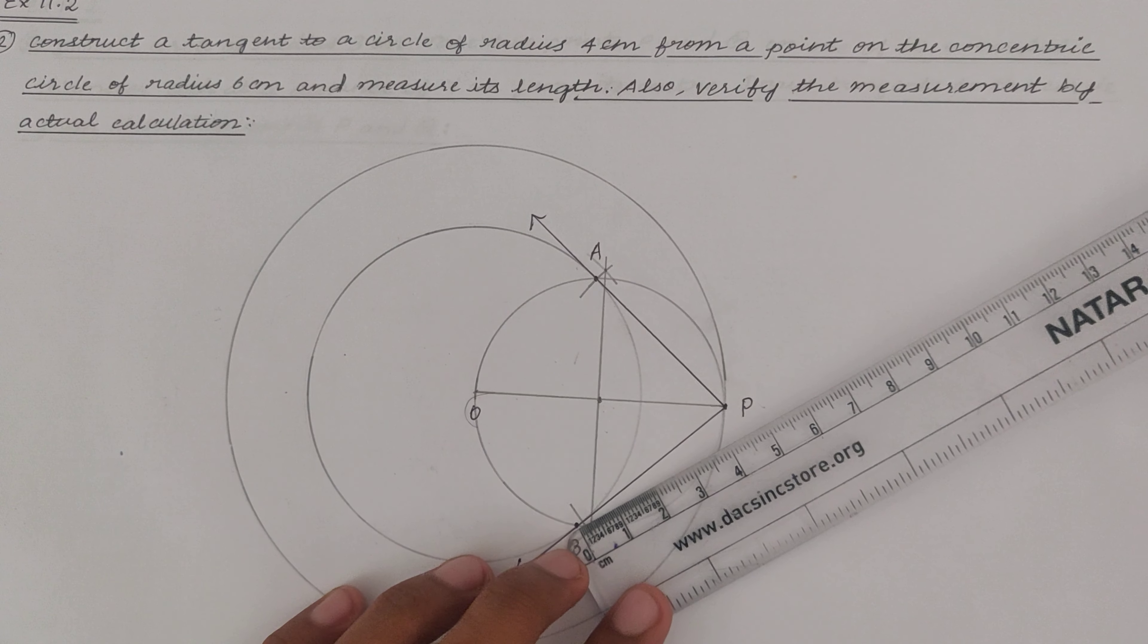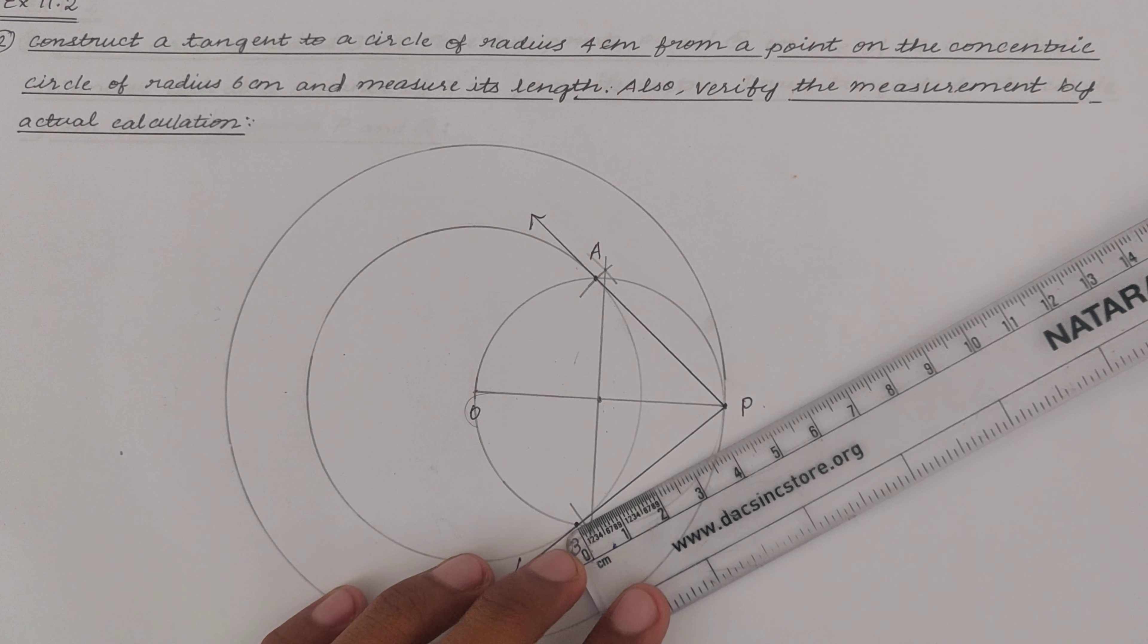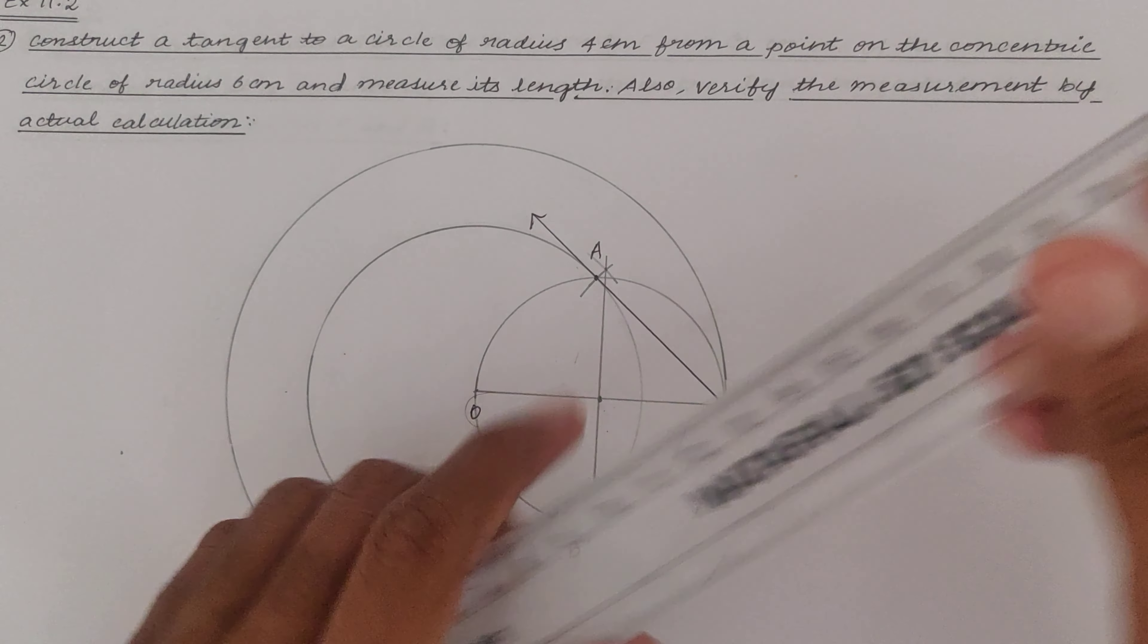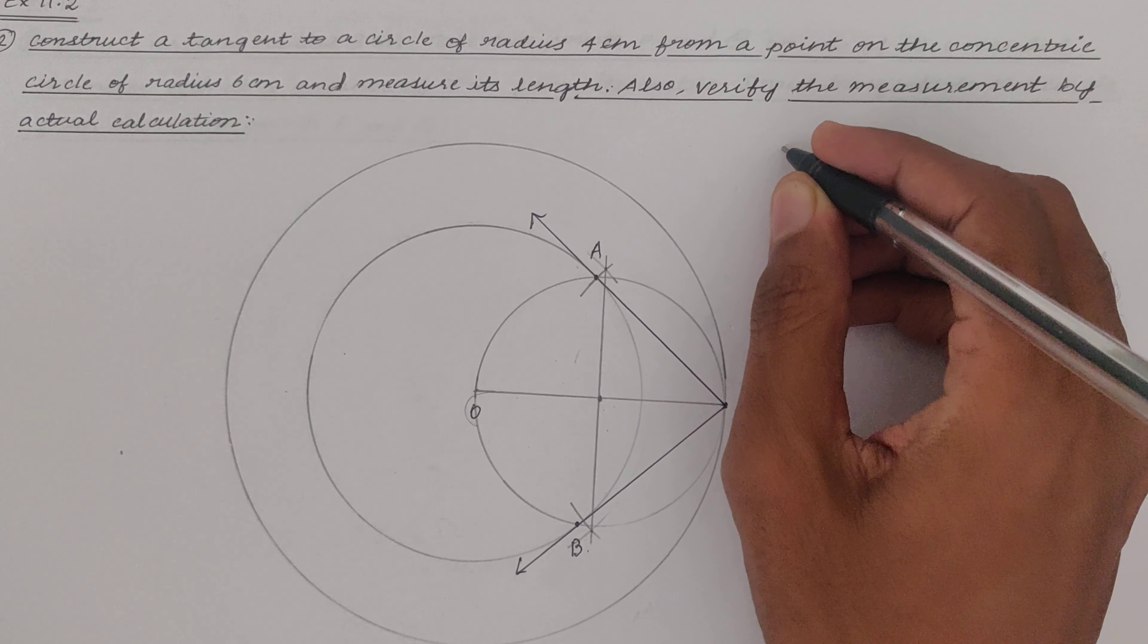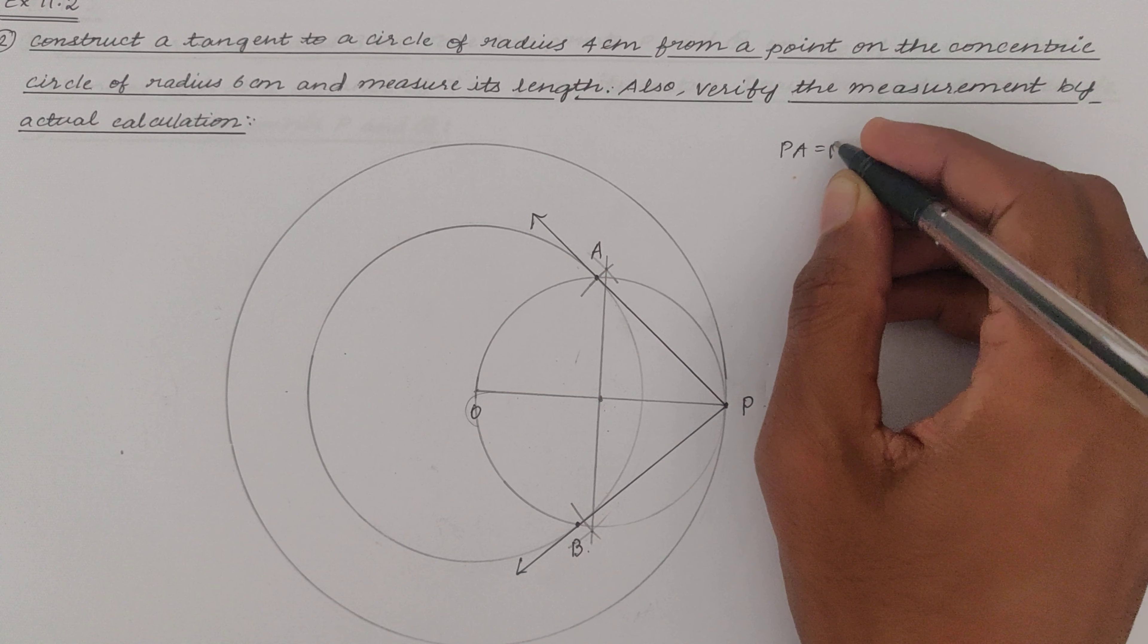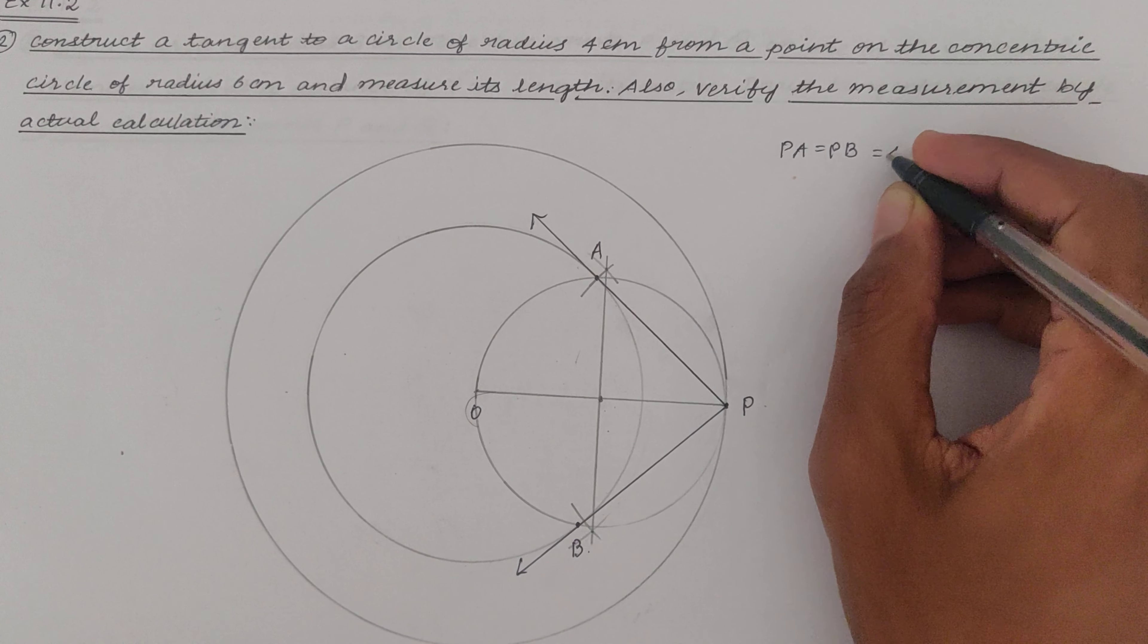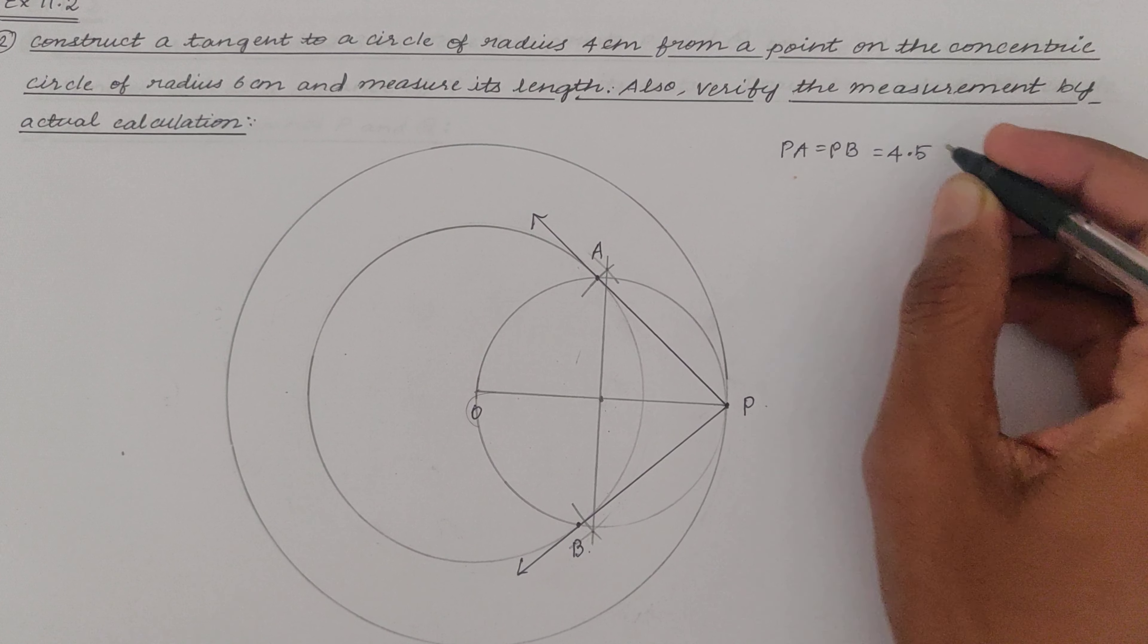Similarly here also we are getting the length of the tangent as 4.5. So we conclude by writing PA is equal to PB is equal to 4.5 centimeters.